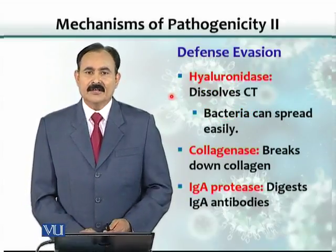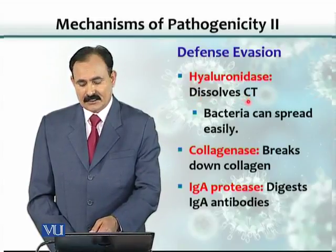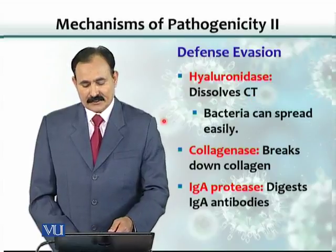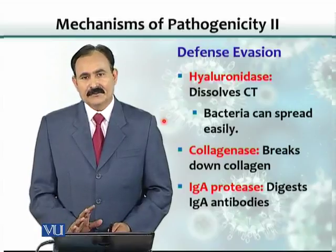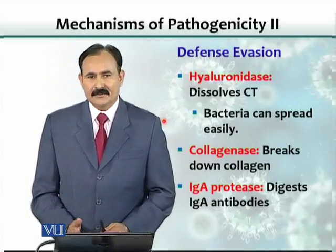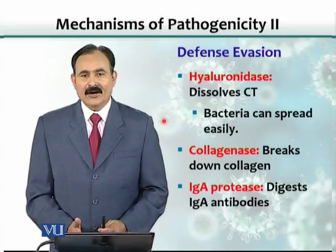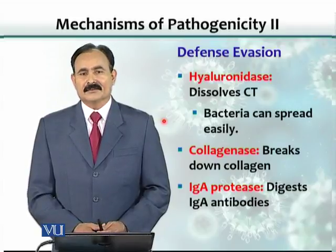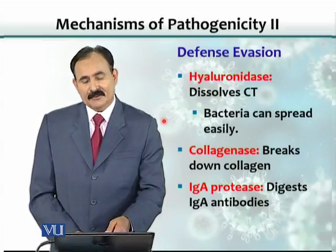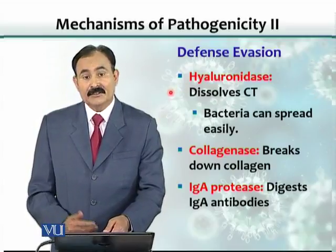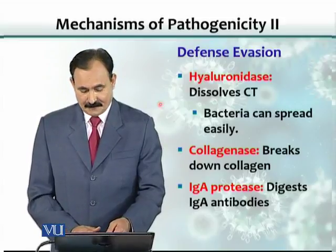Another enzyme is hyaluronidase, which dissolves connective tissue. Connective tissue is present throughout the body — the four typical tissues are epithelial, connective, nervous, and muscular, and connective tissue is the most abundant. Organisms able to make hyaluronidase dissolve this connective tissue and help spread the organism to other areas.